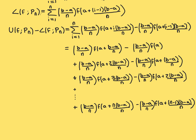We can already see why this simplifies: this term and this term are the same thing except one has a minus sign, so they cancel. Continuing to the third term — (b minus a)/n times f at (a + 3(b minus a)/n), minus (b minus a)/n times f at (a + 2(b minus a)/n) — again the second part of the third term cancels with the first part of the second term. This pattern continues: the second part of each term cancels with the first part of the previous term.